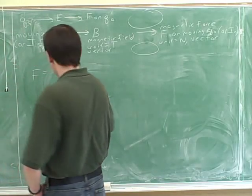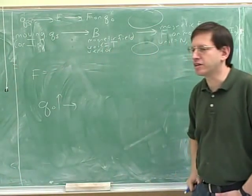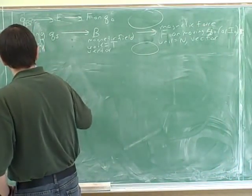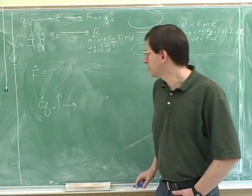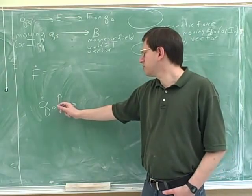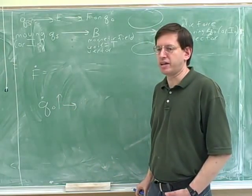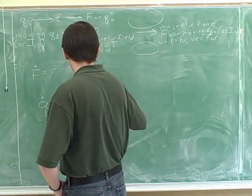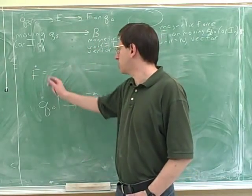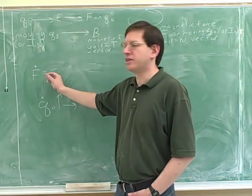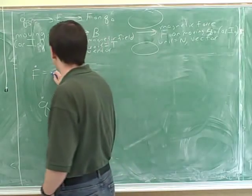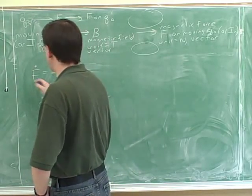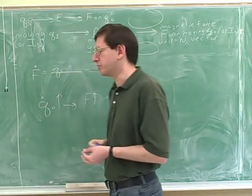Let's say you increase the size of the test charge in magnitude. We're now just focusing on the magnitude of course, because we already know how to find the direction. Do you think this is going to give you a bigger or smaller magnetic force if the charge is bigger? Should the charge go in the numerator or the denominator? It has a direct relationship with the force.